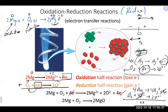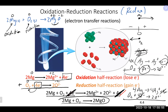When putting the half reactions back together, everything on the left side of the arrow stays on the left and everything on the right stays on the right. The electrons on each side cancel out, leaving the overall reaction. These are called half reactions because each one represents half of what is occurring — oxidation is one half, and reduction is the other half.